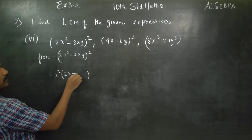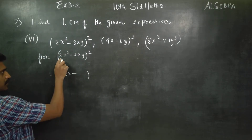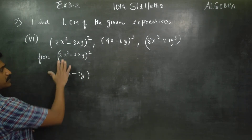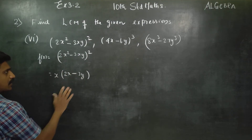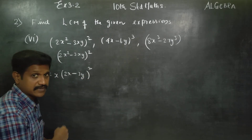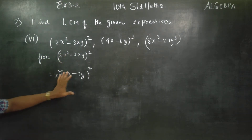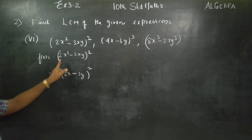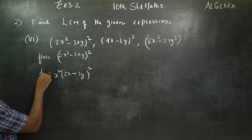2x minus... x is the same. Now it means 2x minus 3y. Now x is common. I am going to add square. This is factorize, simple factorize. f of x is ready. This is f of x.